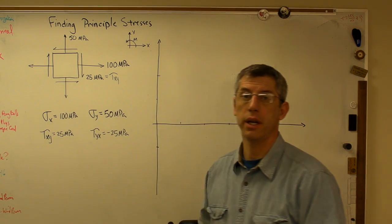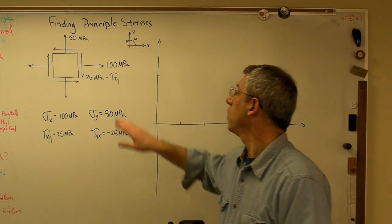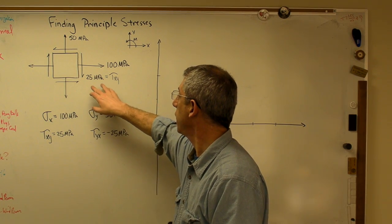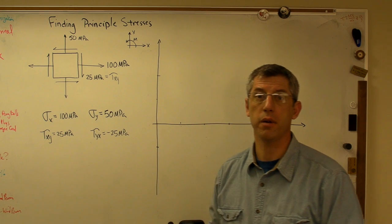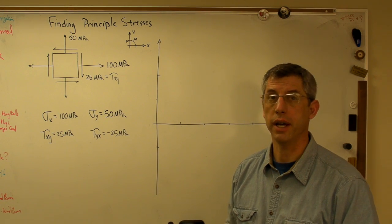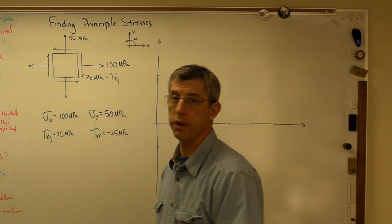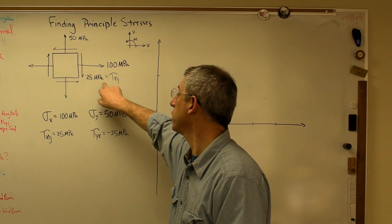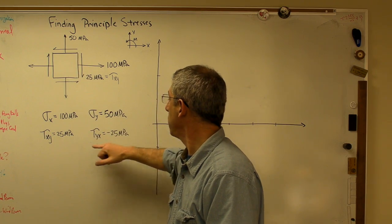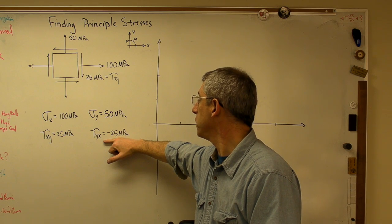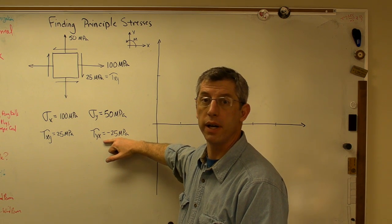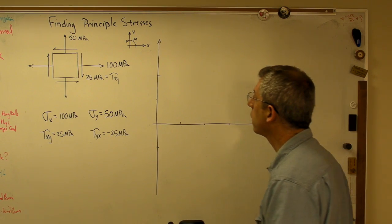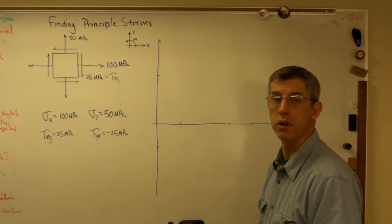I've got a stress element with 100 megapascals on the x-face, 50 megapascals on the y-face, and 25 megapascals shear stress on the x-face. Remember, these are both normal stresses. This is tau xy, shear on the x-face in the y-direction. And equal and opposite up here is tau yx, which is shear on the y-face in the x-direction. These have to be equal and opposite so that you don't have a net moment on your stress element.